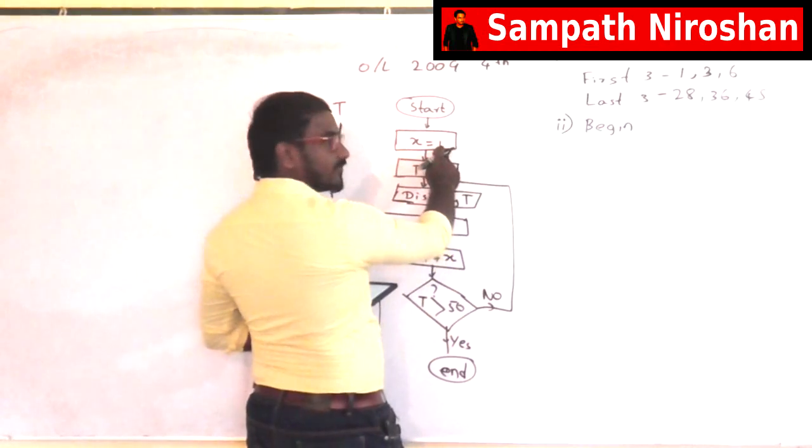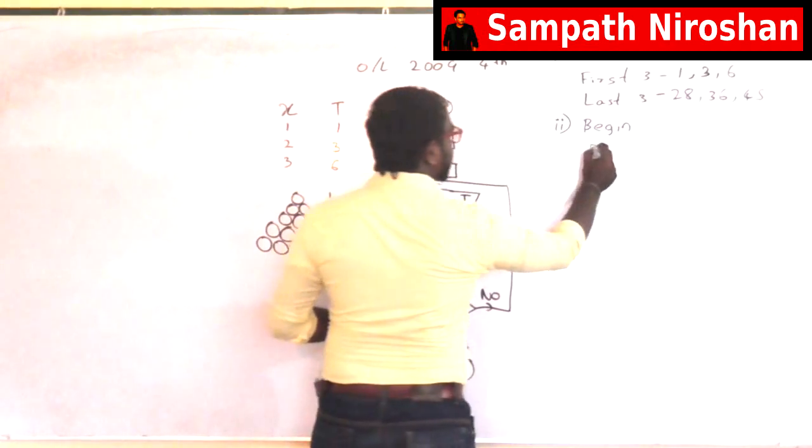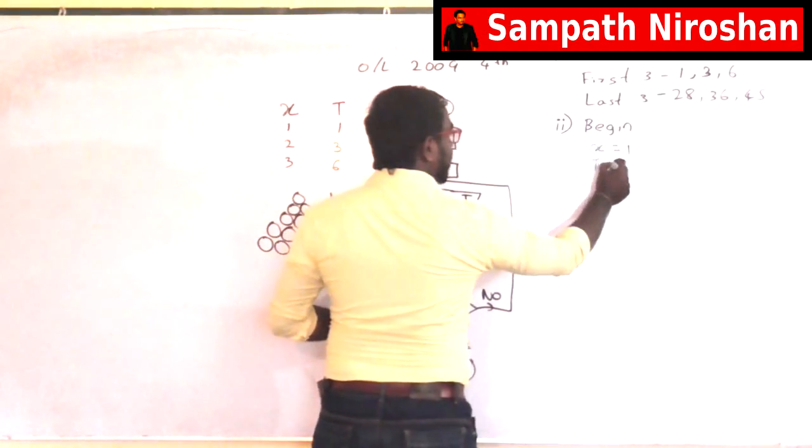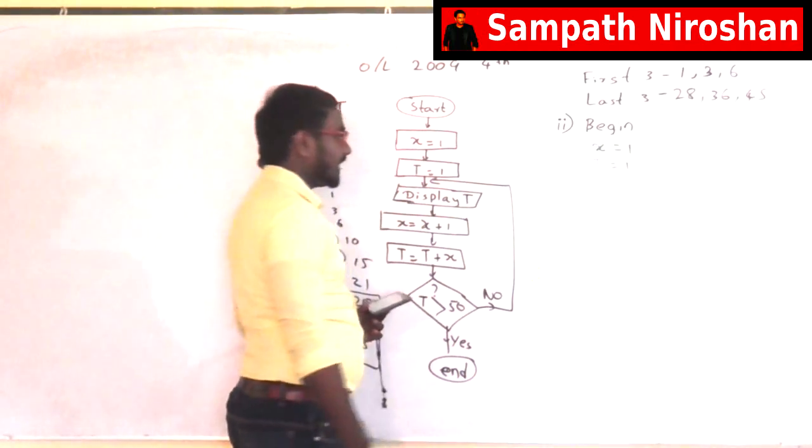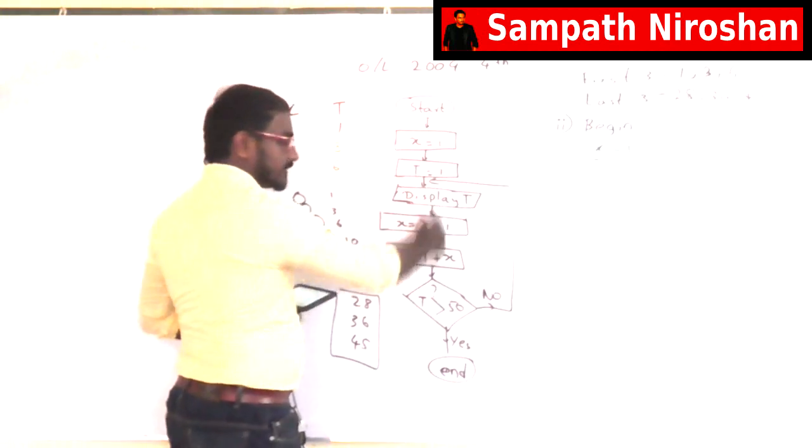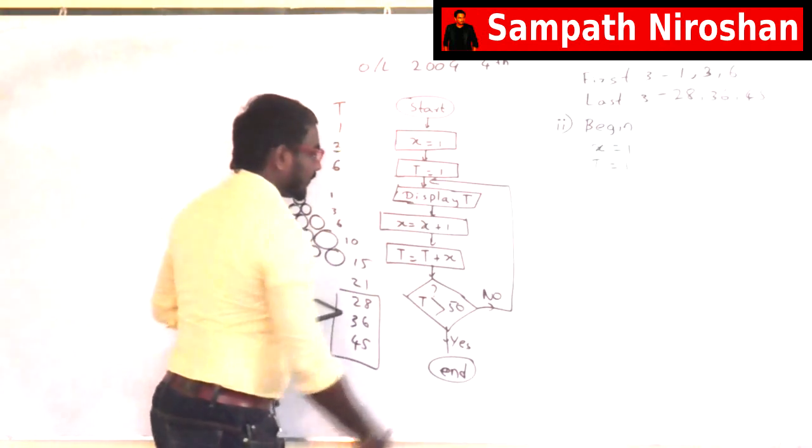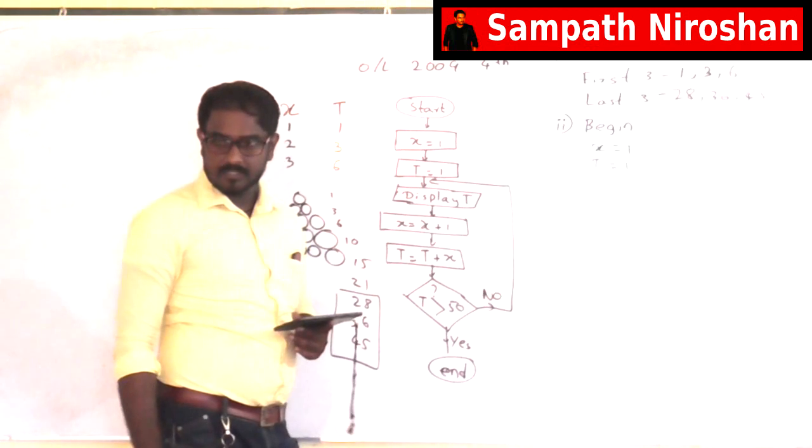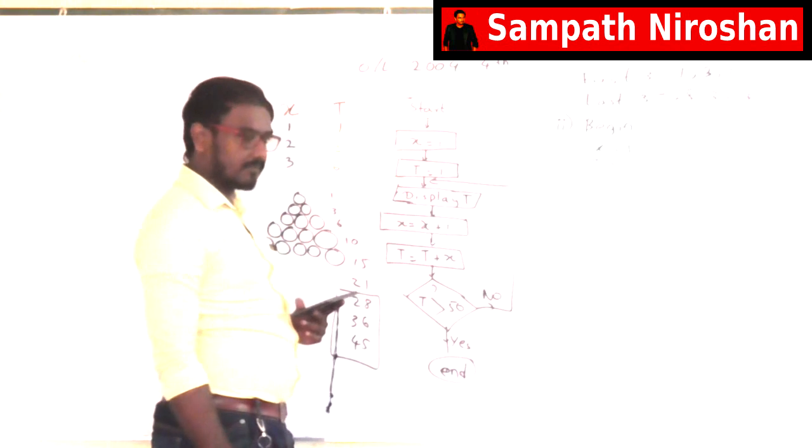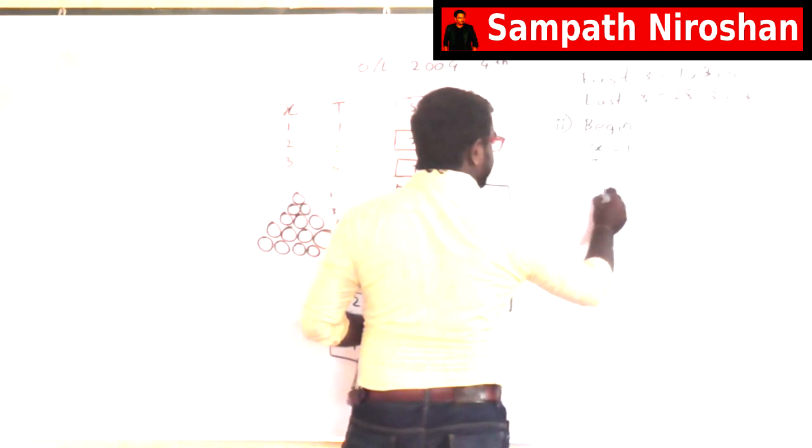And next thing is you have x equals 1. So you are saying x equals 1. And t equals 1. You are saying t equals 1. Next thing is what? You have a loop. So what is the loop you are going to use? I am going to use while loop. While loop, that would be easy. So I am going to use do while.